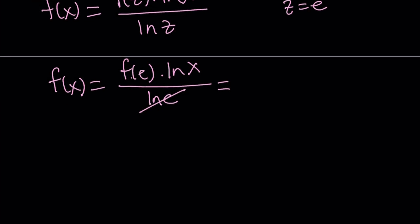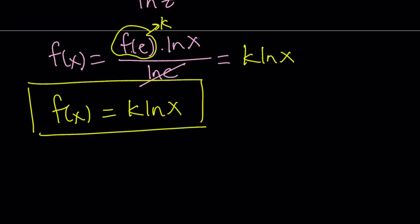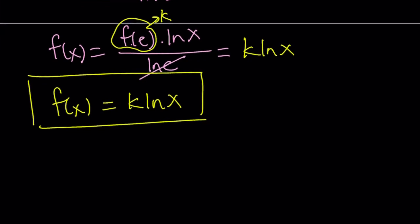Now f of e is a constant, so I can call that k. And this gives us k ln x for f of x. Let me rewrite it: f of x equals k times ln x. k is a constant and k is equal to f of e. Actually in this equation, if you replace x with e, you're going to get f of e equals k. So that will be verified one more time. So this is an expression for f of x and that's what I was looking for. So that's the solution.